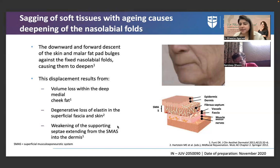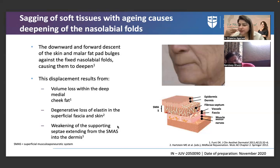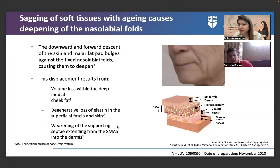For the third client — those who don't want injectables — start with radiofrequency and then push them toward PRP with a roller or derma pen. After a few sessions of PRP they can be proposed injectable PRP as well. When they see results with topical PRP, they become more open to injectable options.